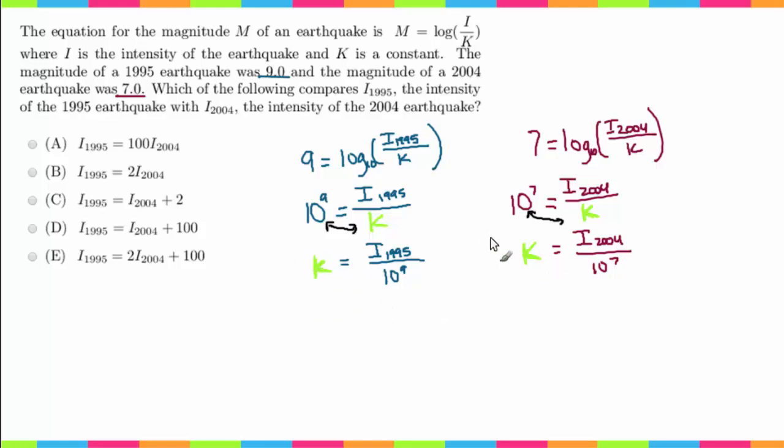So now that I have these two equations and I have this constant K, I can just substitute this in for this K, because remember K is equal to this, so it's perfectly fine to plug it in. So I'm going to take this and substitute it in here for K. So this new line is going to be I sub 1995 over 10 to the 9th is equal to I sub 2004 over 10 to the 7th. So now just looking at the answer choices, since these are all the intensity of 1995 equals, I'm going to go ahead and isolate this variable next.